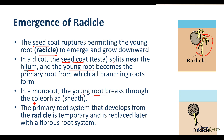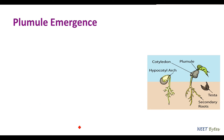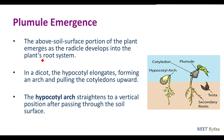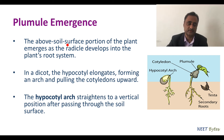In the case of monocot, the young root actually breaks through the coleorhiza — a covering over the root tip. The primary root system that develops from the radicle is actually temporary, and later on it is replaced by a large number of fibrous root systems, as we have seen in the case of monocotyledons.